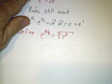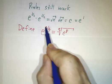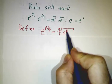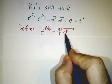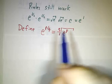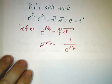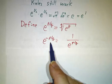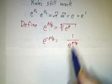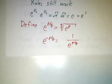And then we define e to a positive rational number, e to the p over q, is just e to the p, that's e times e times e, p times qth root. And then we define e to a negative rational number as just being 1 over that. So now we've defined e to any rational number.